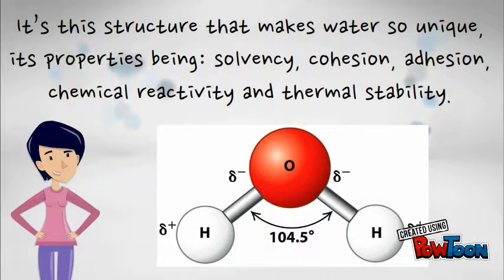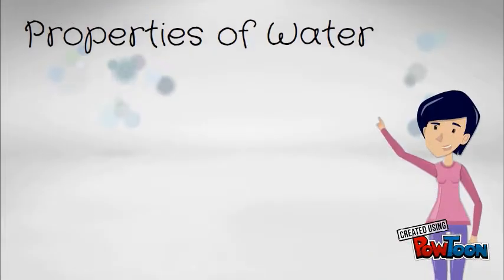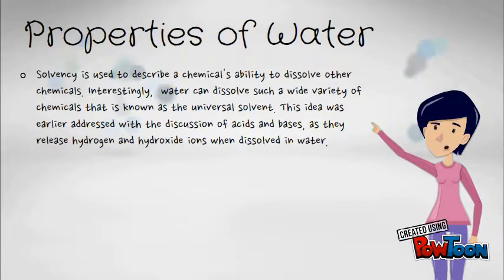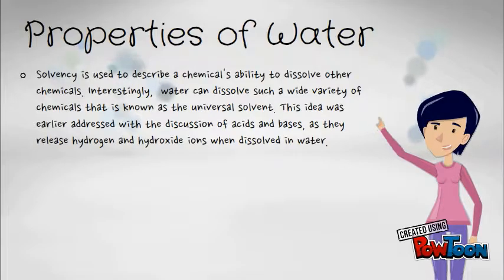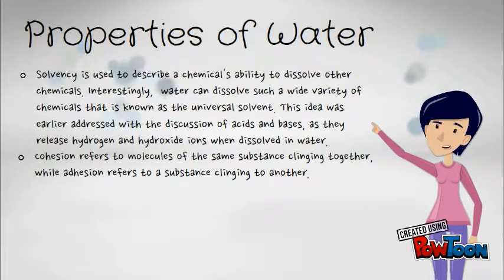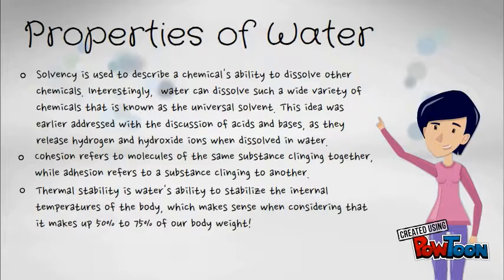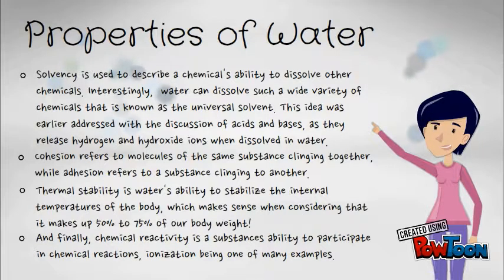It's this structure that makes water so unique, its properties being solvency, cohesion, adhesion, chemical reactivity, and thermal stability. Solvency describes a chemical's ability to dissolve other chemicals — water can dissolve a wide variety of chemicals, earning it the title of universal solvent. This was touched on with the discussion of acids and bases, which release hydrogen and hydroxide ions when dissolved in water. Cohesion refers to molecules of the same substance clinging together, while adhesion refers to a substance clinging to another. Thermal stability is water's ability to stabilize the internal temperature of the body, which makes sense considering it makes up 50 to 75% of our body weight. Finally, chemical reactivity is a substance's ability to participate in chemical reactions, ionization being one of many examples.